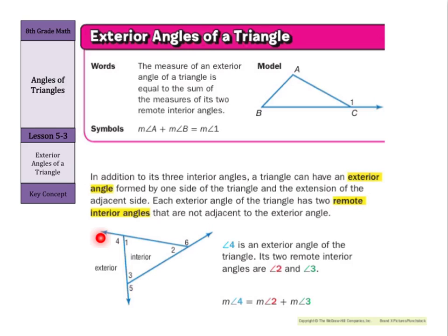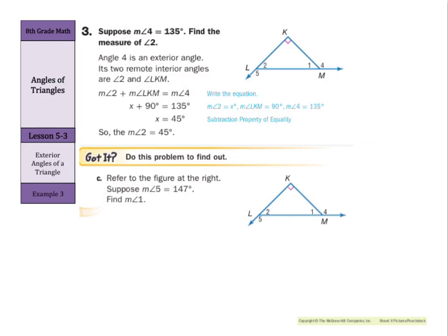In this triangle, angle 4 is an exterior angle, and its two remote interior angles are angles 2 and 3. So the measure of angle 4 equals the measure of angle 2 plus angle 3. For example, if angle 4 is 135 degrees, we find angle 2. Since angle 2 plus 90 degrees equals 135, we subtract 90 from both sides, and angle 2 equals 45 degrees.